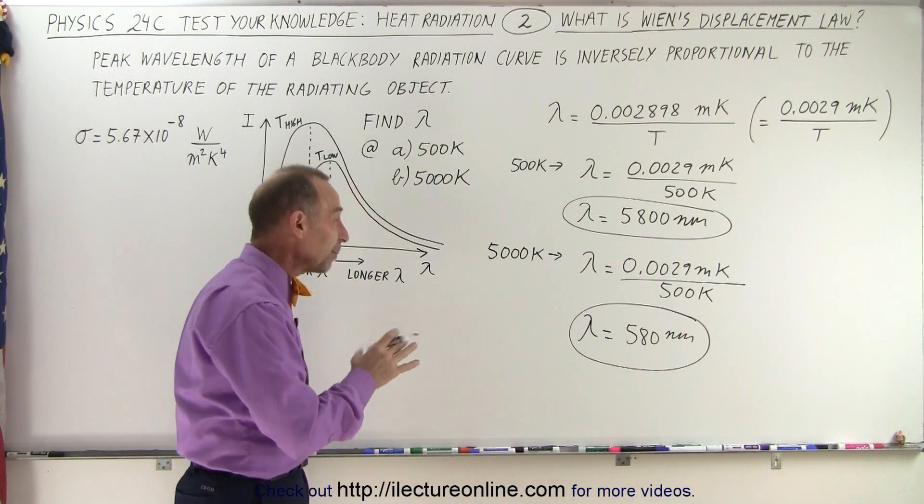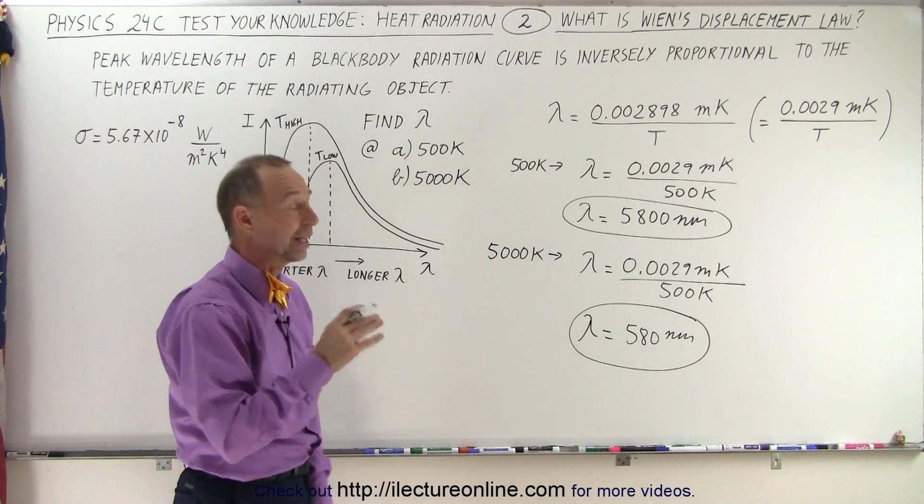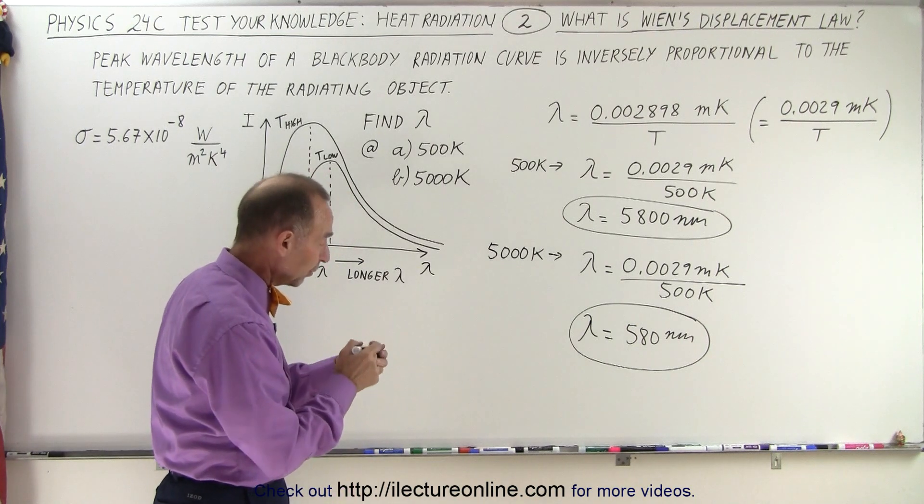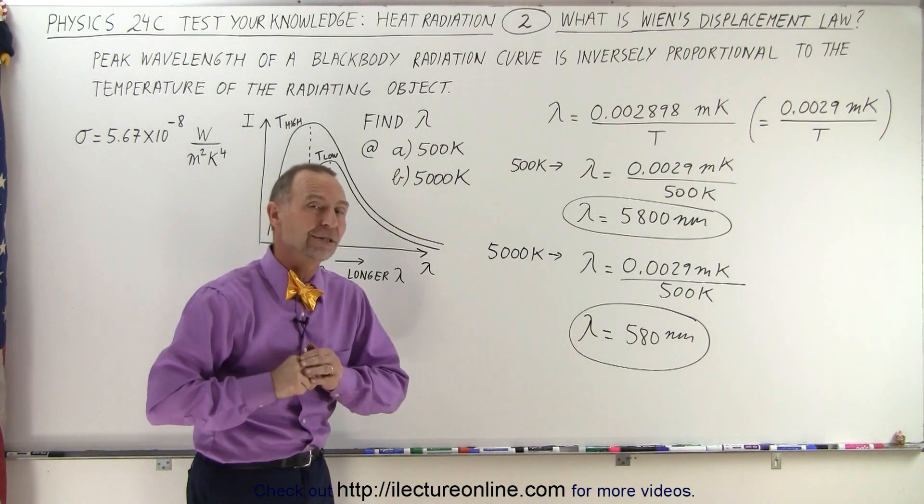Now for the sun, the temperature is more like around 5,800 Kelvin for a typical peak wavelength around 500 nanometers.